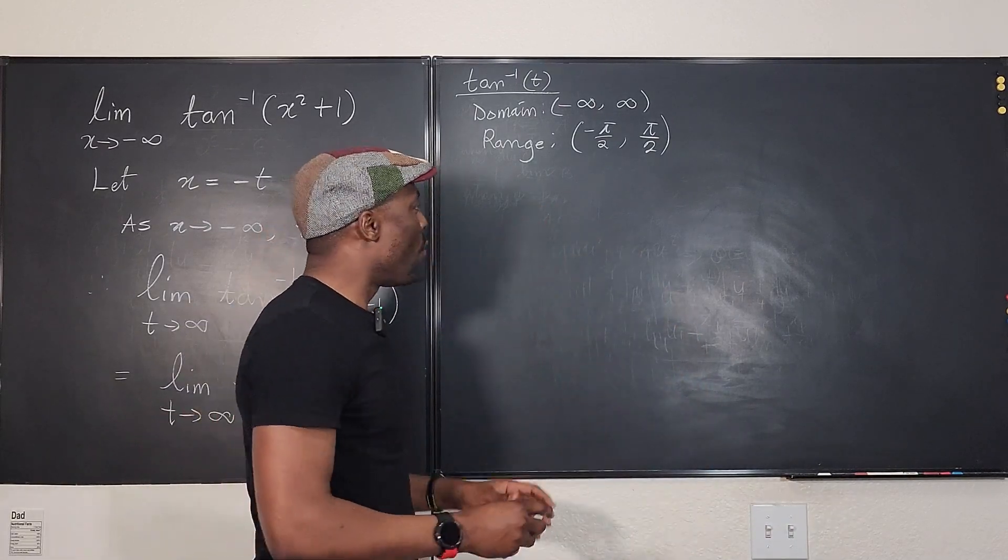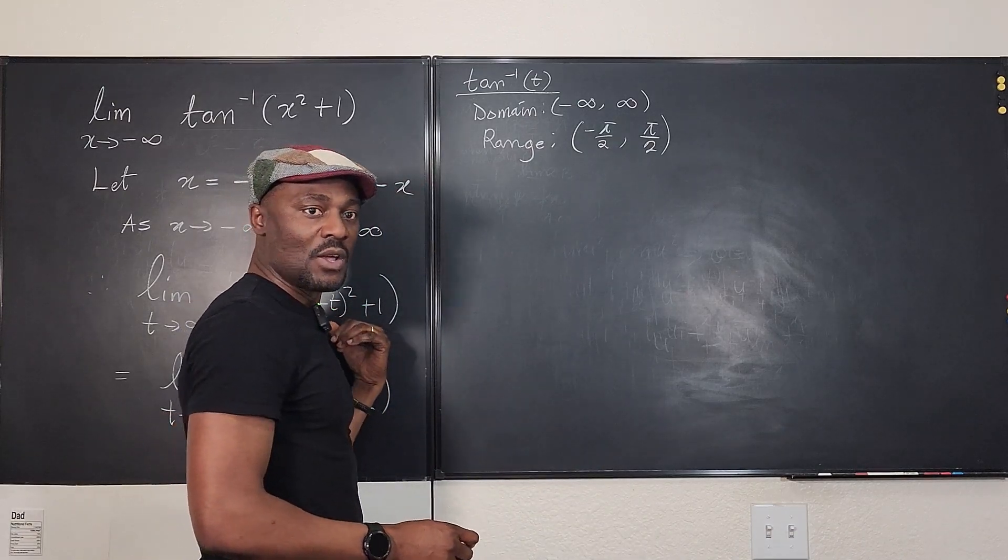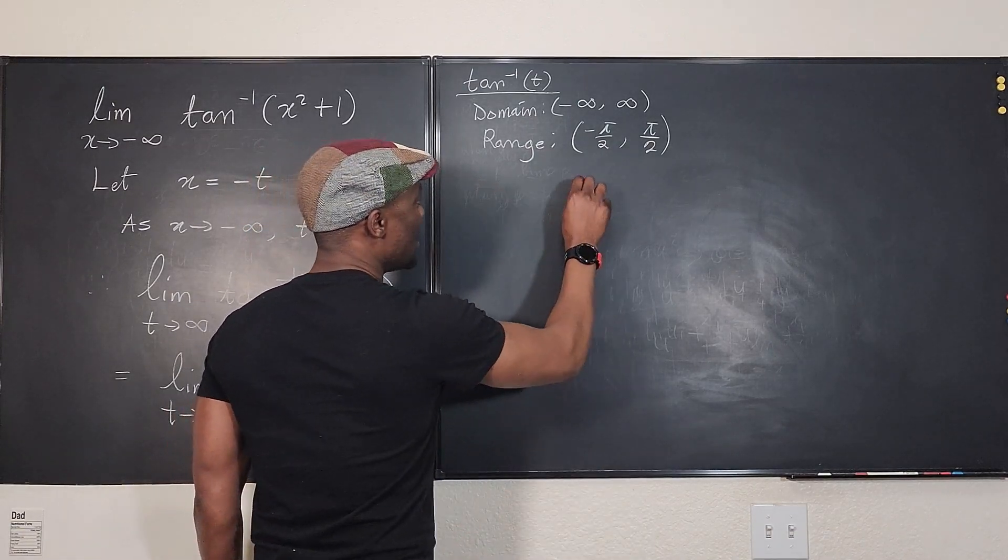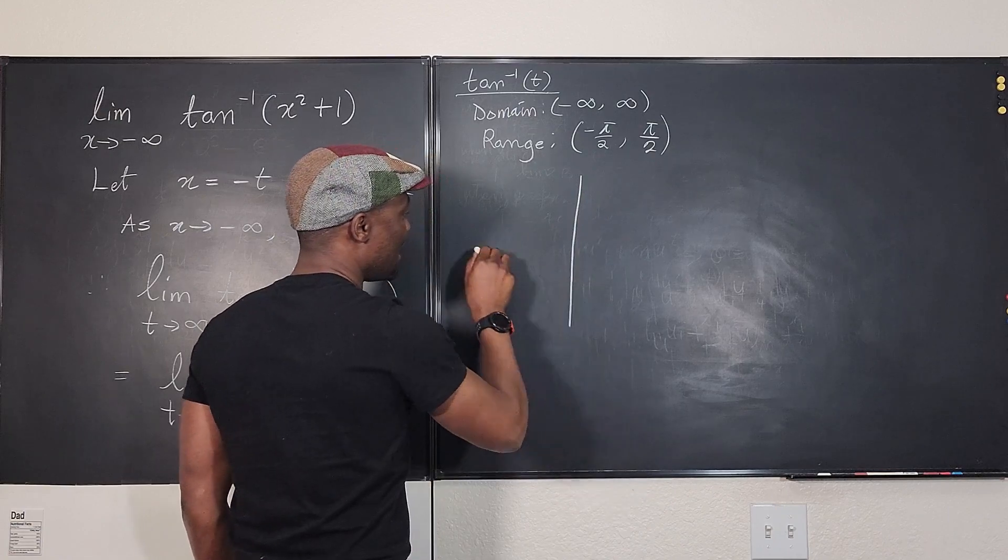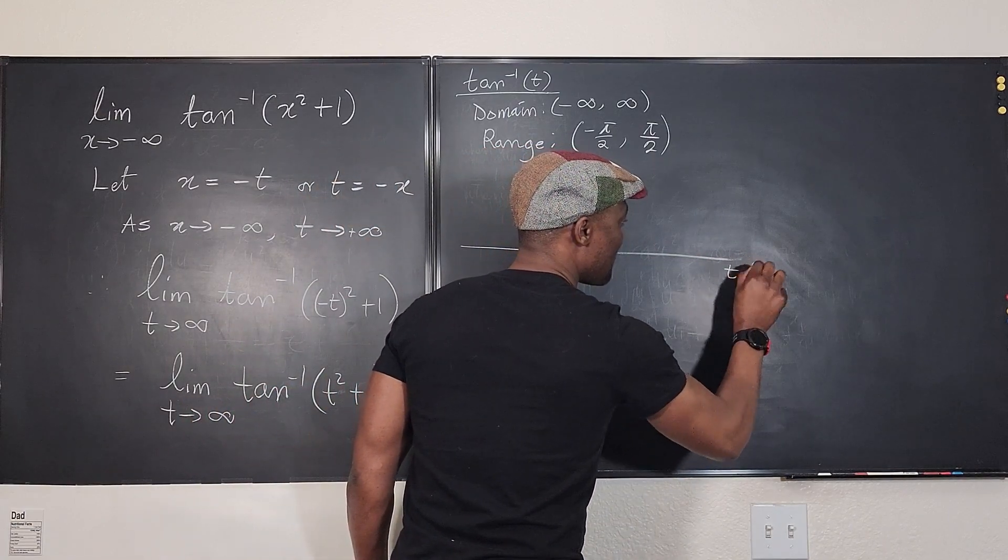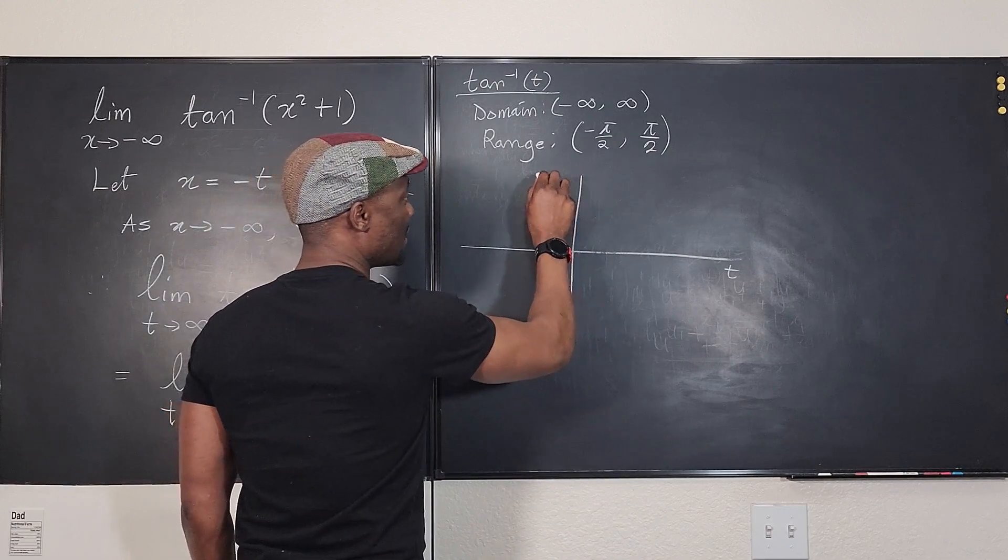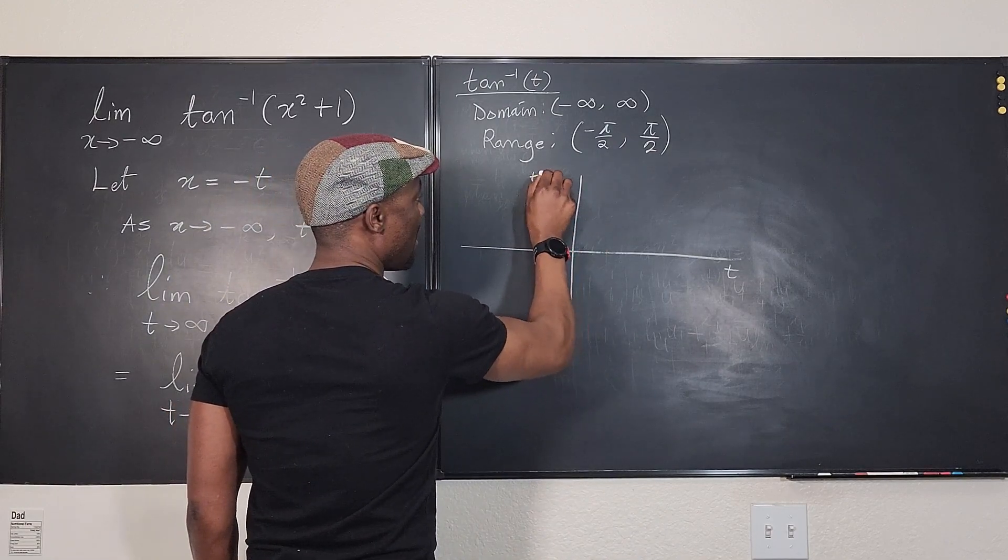So with that, what does this graph look like? Well, the graph of arctan looks like this. If this is t and this is arctan t, this is the graph of arctan t.